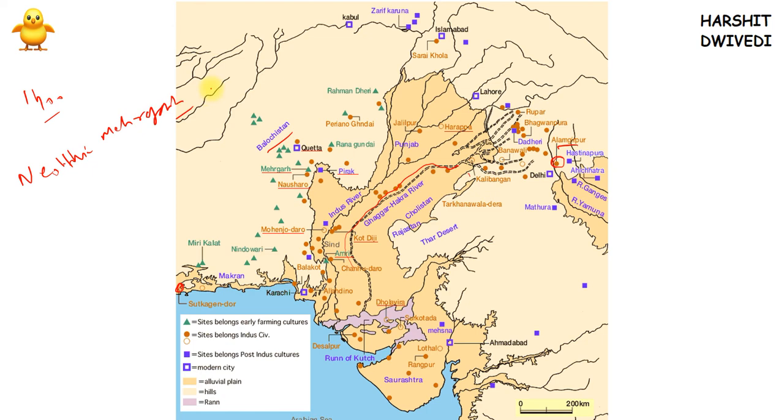Among the four ancient civilizations — Egypt, Mesopotamia, China, and South Asia — the biggest one is Indus Valley civilization. It was said to be a successor of the Neolithic site named Mehrgarh, and when Indus Valley civilization came, it represented an urban revolution. Mehrgarh started from around 7000 BC.